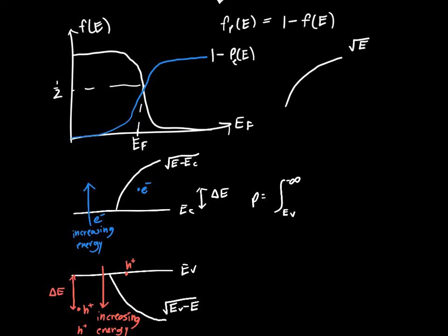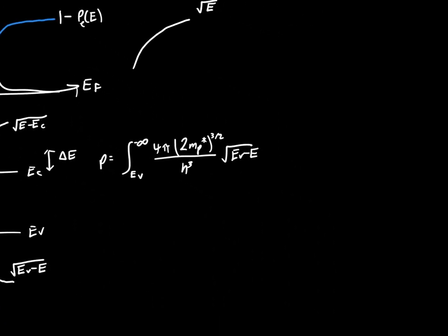It's equal to gv(E), which is 4π times twice the effective mass of holes to the three halves divided by h cubed, times the square root of EV minus E. That's all multiplied by our Fermi function, or one minus our Fermi function: one minus one over one plus e to the (E minus EF) over kT, times dE.